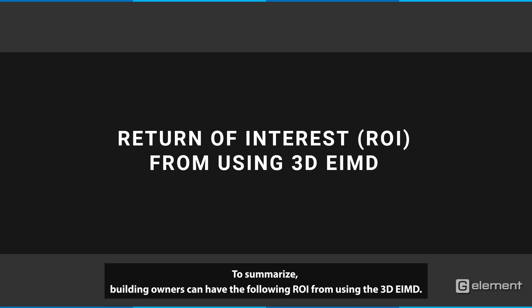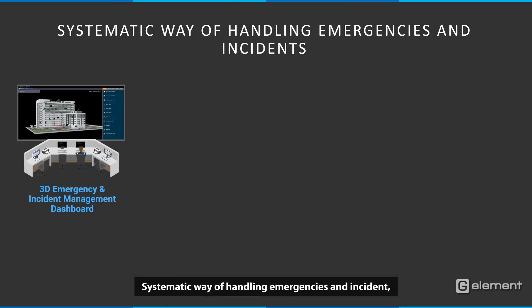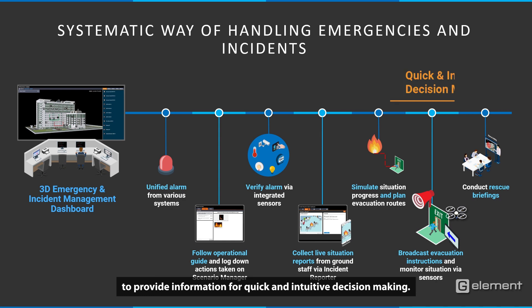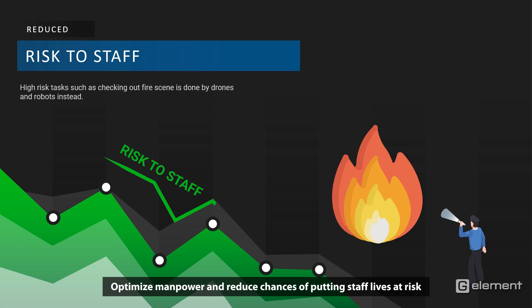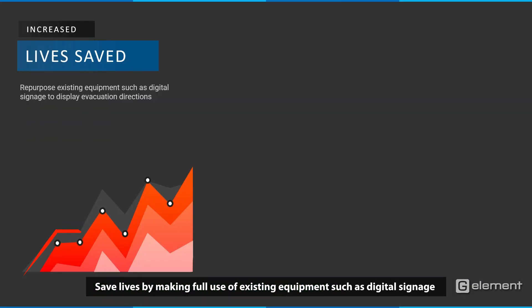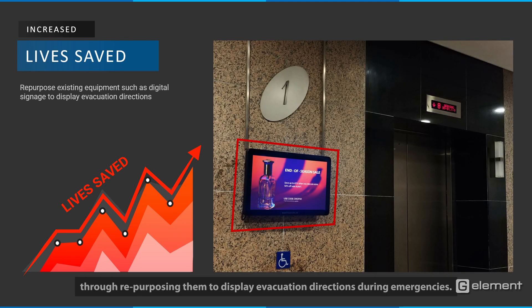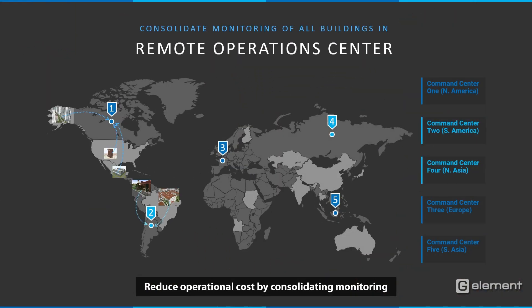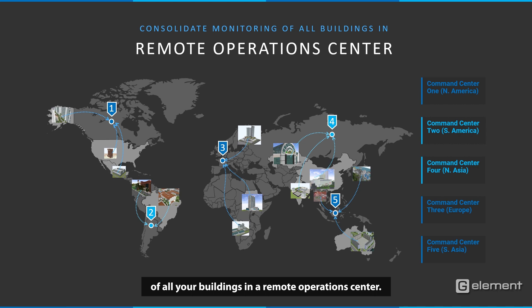To summarize, building owners can have the following ROI from using the 3D EIMD: a systematic way of handling emergencies and incidents with easy access to sensors from various systems at the same location for quick and intuitive decision making; optimized manpower and reduced chances of putting staff lives at risk via remote use of robots and drones; saving lives by repurposing existing equipment such as digital signage to display evacuation directions during emergencies; and reduced operational cost by consolidating monitoring of all buildings in a remote operations center. The 3D Emergency and Incident Management Dashboard, brought to you by G-Element.